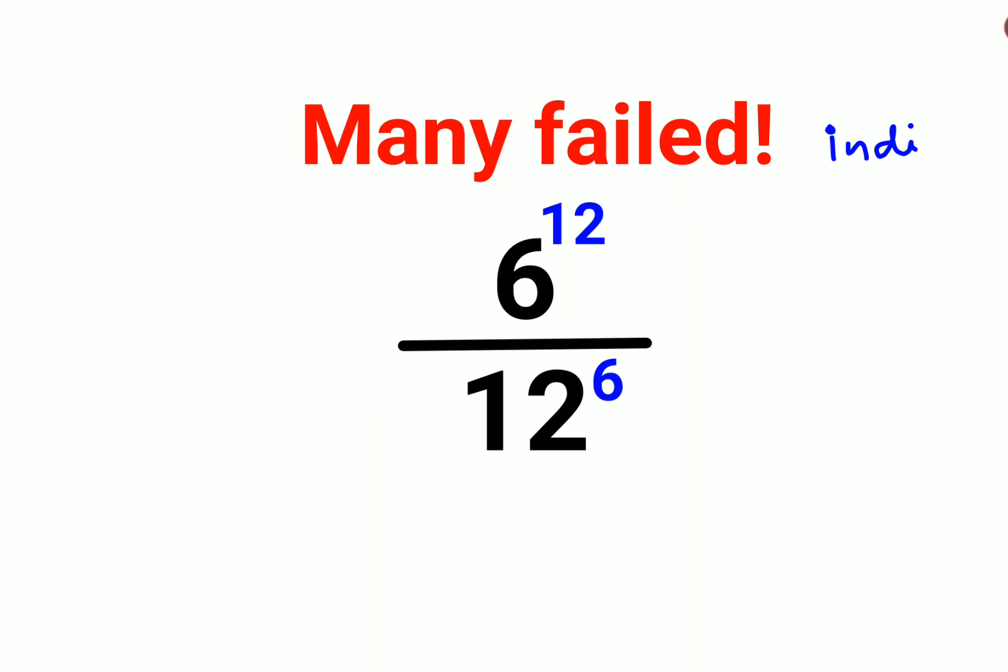Now how do we do this? Please understand here: when you have a raised to m times n, it can be written as a raised to m, the whole raised to n. Now we have 12 here, so we can write this as 6 raised to 6 times 2, which can be written as 6 raised to 6, the whole raised to 2, upon 12 raised to 6.